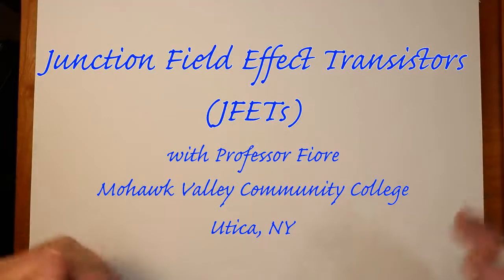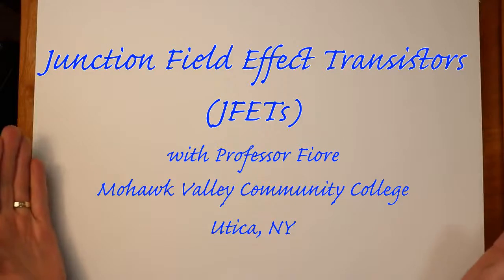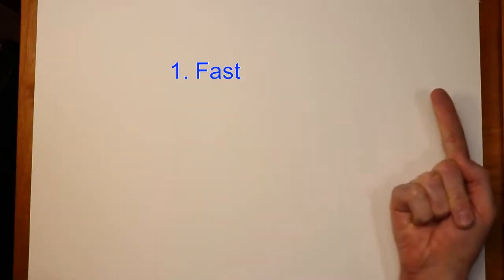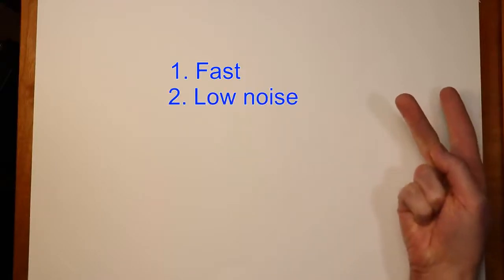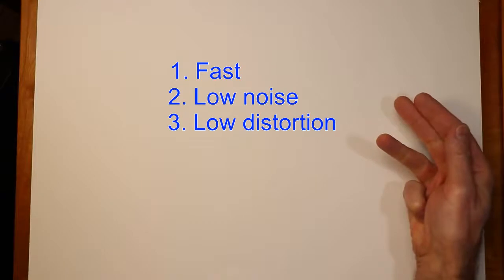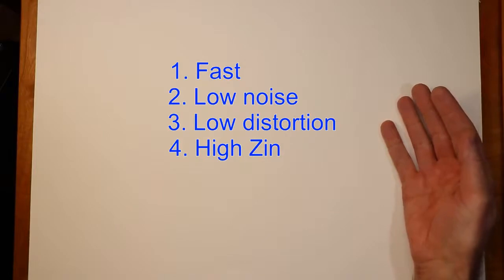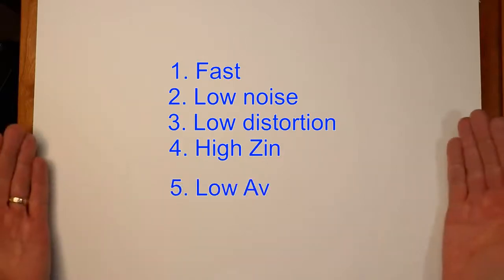Today we're going to start talking about Junction Field Effect Transistors or JFETs. These devices are distinct from bipolar junction transistors. They have some advantages and some disadvantages. Quick list, item number one: they tend to be fast devices, good high-frequency devices. They tend to have low noise, also low distortion. In some configurations, they have a very, very high input impedance at low frequencies and DC. On the downside, they don't tend to have as much voltage gain potential as bipolars. So let's not think of them as replacements for bipolars, but they're just a different sort of device. It has its own pluses and minuses.